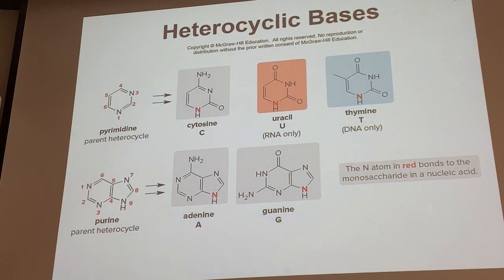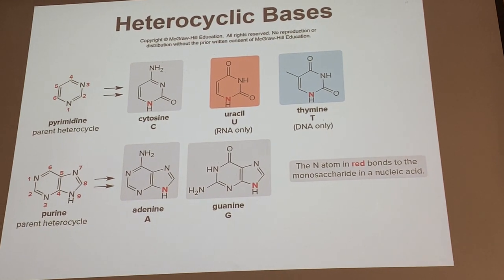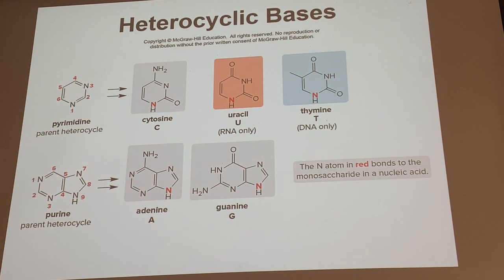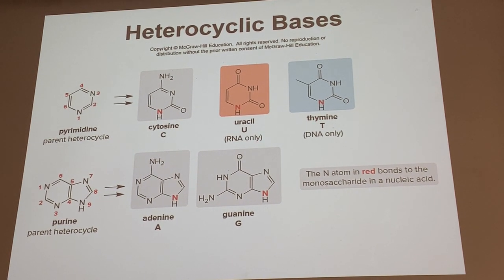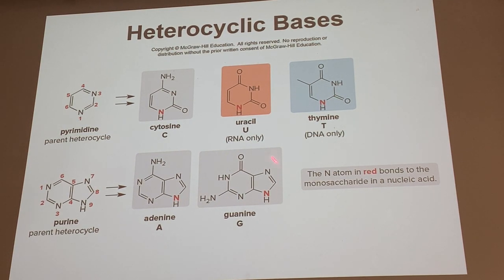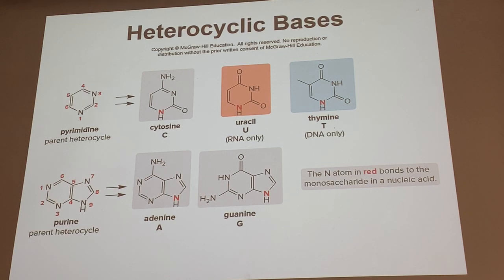The heterocyclic bases are all aromatic heterocycles. Even though many are not drawn with an aromatic resonant structure, they all have aromatic resonant structures. There are five of them: uracil is only present in RNA, thymine is only present in DNA, and they differ by simply a methyl group. These five bases are based on two parent heterocyclic ring systems: pyrimidines, which are like pyridine but with an extra nitrogen, and purines, which are bicyclic heterocycles.